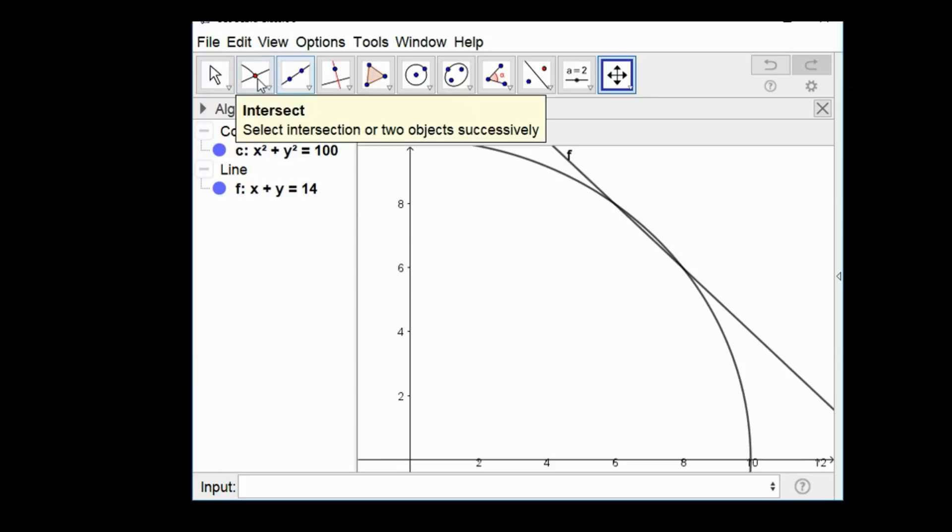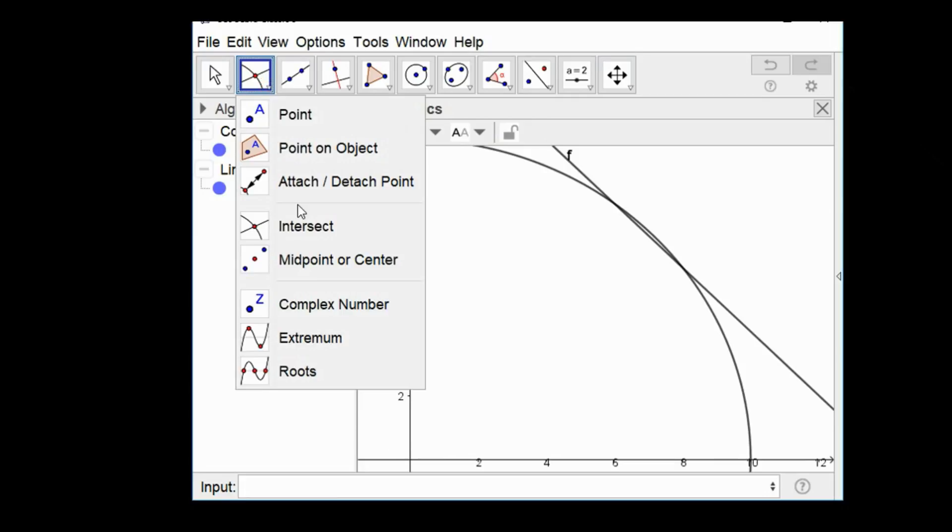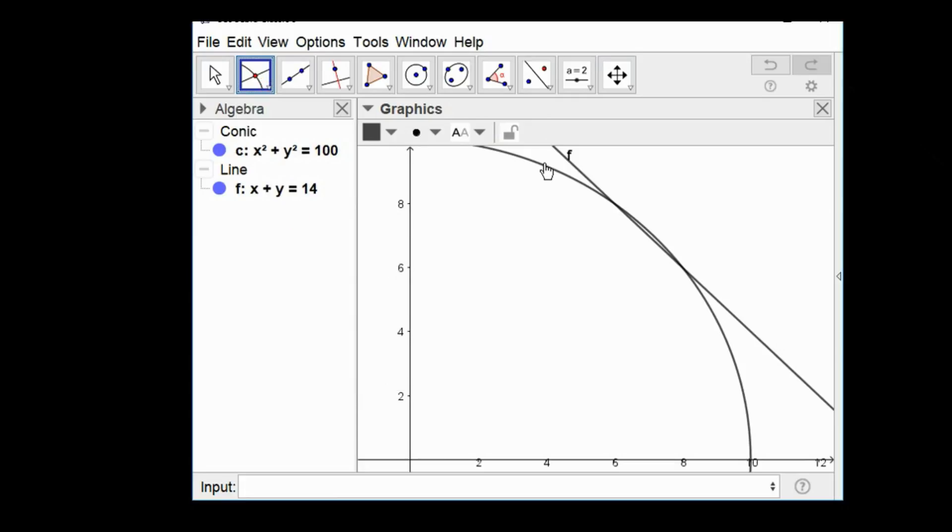So we're going to look using the intersect tool of GeoGebra. You're going to click on the circle and then click on the line, and there you go. The points of intersections are 6, 8 and 8, 6.